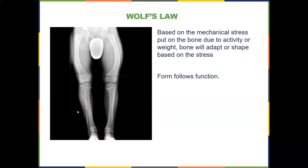Here's a radiograph demonstrating Wolff's Law — you can see deformation in the femurs based on mechanical stress from activity or weight. Looking at the tibia and fibula, something is obviously wrong. You always want to know normal anatomy so you can identify abnormal right away.